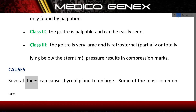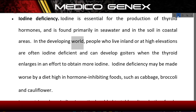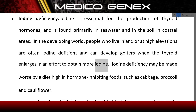Causes. Several things can cause the thyroid gland to enlarge. Iodine deficiency: Iodine is essential for the production of thyroid hormones and is found primarily in seawater and in the soil in coastal areas. In the developing world, people who live inland or at high elevations are often iodine deficient and can develop goiters when the thyroid enlarges in an effort to obtain more iodine. Iodine deficiency may be made worse by a diet high in hormone-inhibiting foods, such as cabbage, broccoli, and cauliflower.